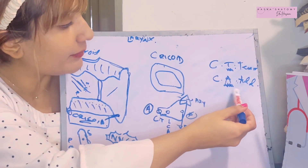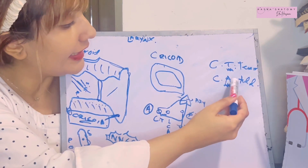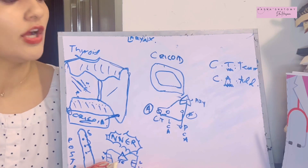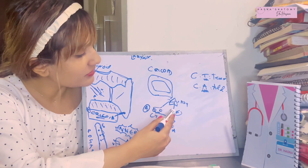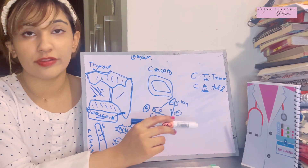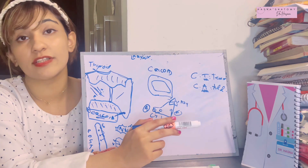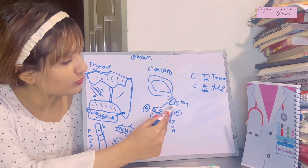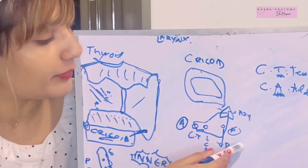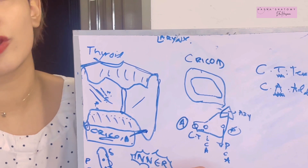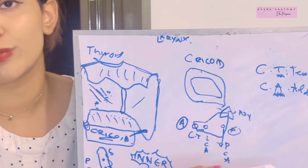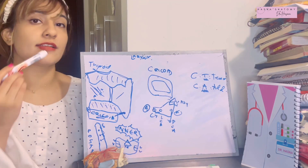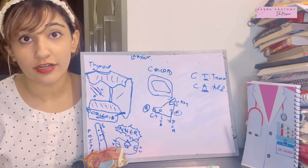The lateral cricoarytenoid muscle — CA, where A stands for adductor of the vocal cord. Moving posteriorly to the outer aspect of the lamina of the cricoid, the posterior cricoarytenoid muscle attaches. Despite its similar name, the posterior cricoarytenoid is actually an abductor of the vocal cord. That covers everything you need to know about the attachments of the cricoid cartilage.